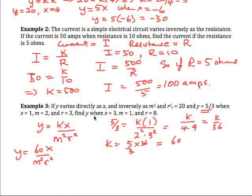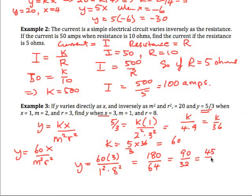Now we want to find y when x is 3, and when m is 1, and r is 8. So this becomes 60 times 3 is 180, and 1 times 64. We can cancel by twos at least: 90 over 32. We can do twos again actually, so that's 45 over 16.